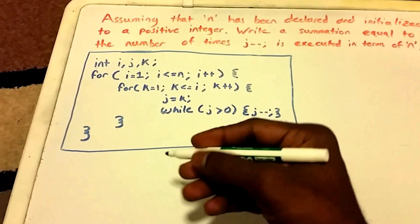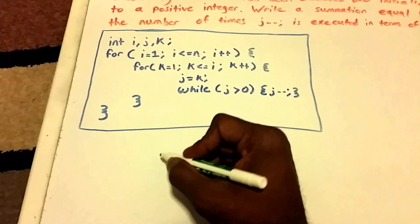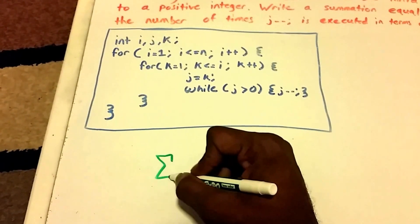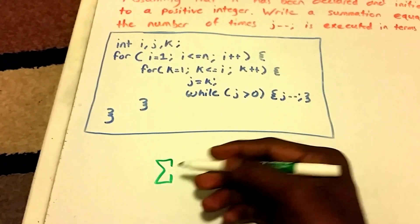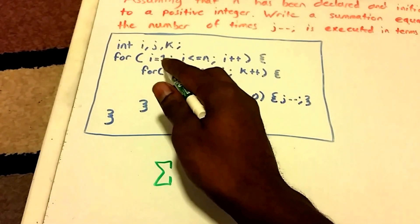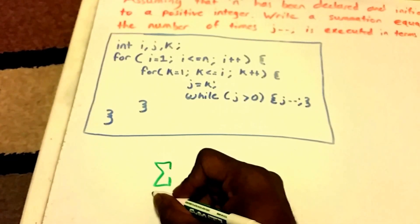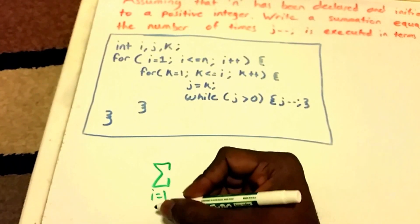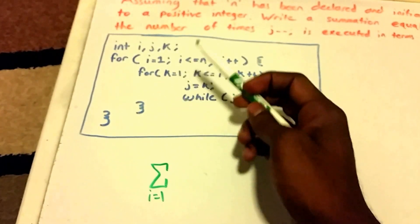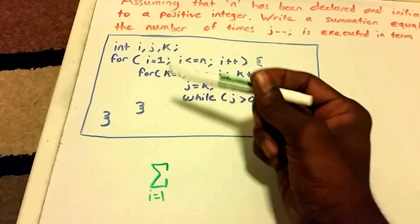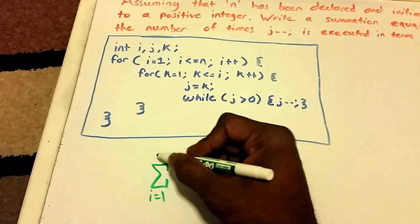So let's go ahead and write this summation. First thing we're going to do is write the outer loop as a summation. So it runs from i equals one, so I'm going to put i equals one here. And it's going to run up to n, so we're going to put n here.